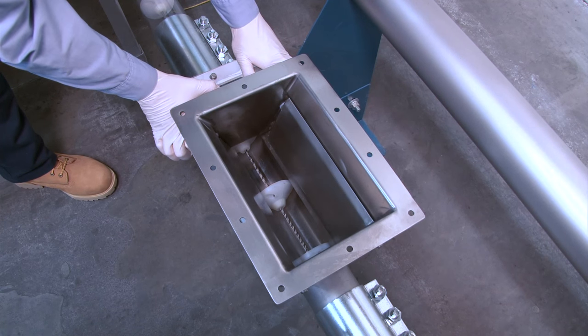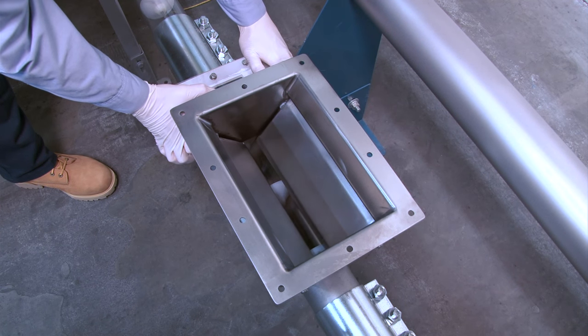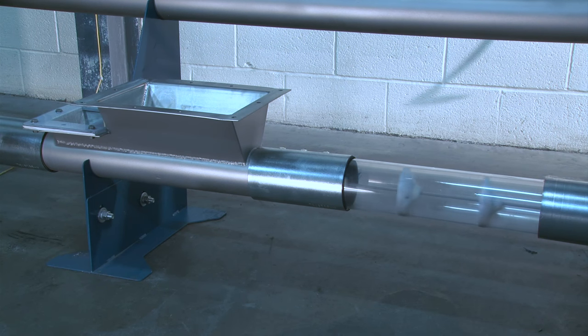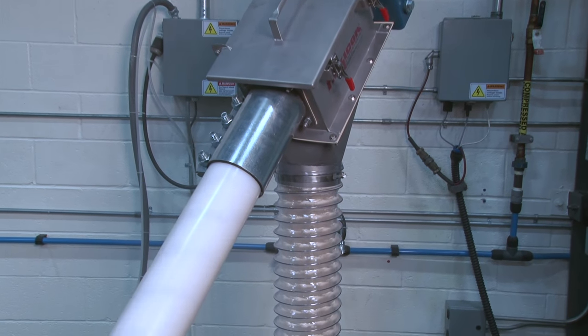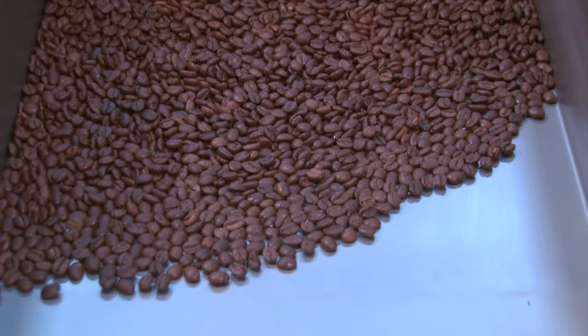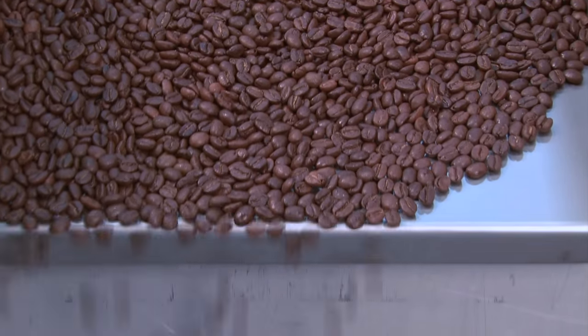Material can enter the conveyor through inlets with adjustable metering gates to control material flow or through non-metered inlets that rely on upstream metering equipment to regulate the flow. FlexiCon can integrate the conveyor with flexible screw feeders, vibratory feeders, or any other type of volumetric or gravimetric feeder.